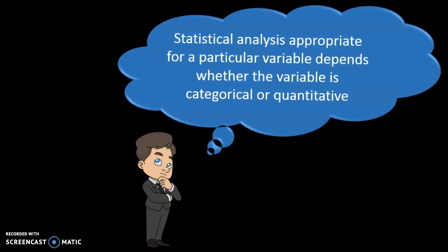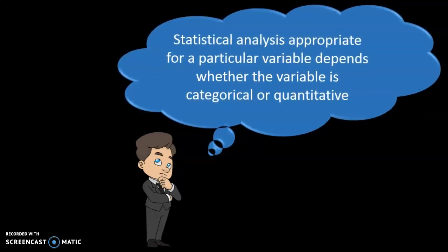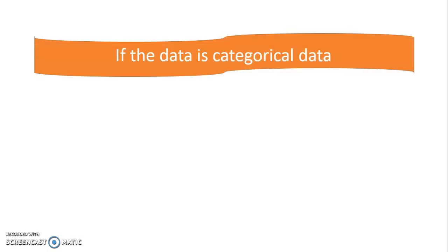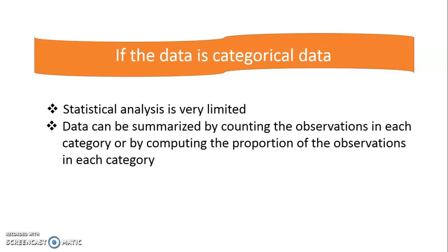The statistical analysis appropriate for a particular variable depends on whether the variable is categorical or quantitative. When we talk about categorical variables, the statistical analysis is very limited, because categorical data only explains categories which can basically identify the type of the data. In this case, the data can be summarized by either counting the observations in each category or computing the proportion of observations in each category.